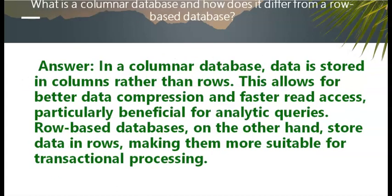What is a columnar database and how does it differ from a row-based database? In a columnar database, data is stored in columns rather than rows. This allows for better data compression and faster read access, particularly beneficial for analytics queries. Row-based databases, on the other hand, store data in rows, making them more suitable for transactional processing.